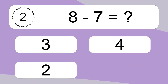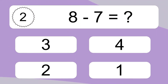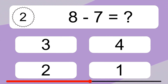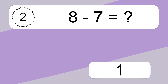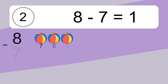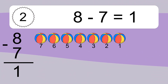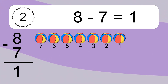8 minus 7 equals what? 8 minus 7 equals 1. Let's count it. 7, 6, 5, 4, 3, 2, 1.